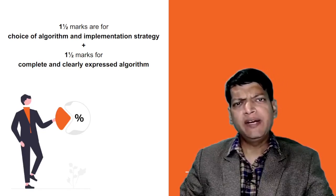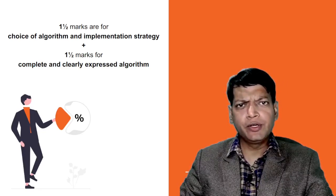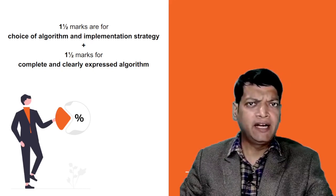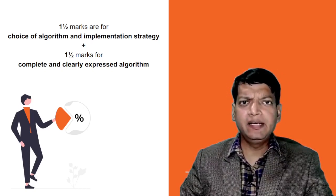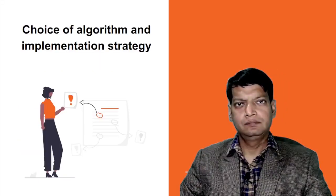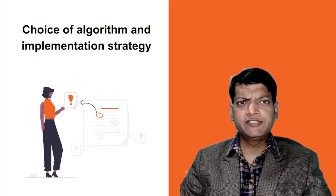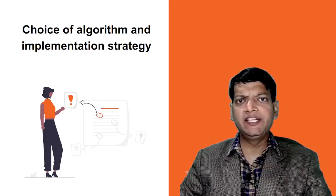From the ISC computer science practical perspective, the total marks allotted for the algorithm is three, out of which one and a half marks are for the choice of algorithm and implementation strategy, and half marks for complete and clearly expressed algorithms. Let us first discuss choice of algorithm and implementation strategy.